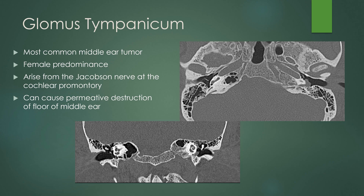The glomus tympanicum is the most common middle ear tumor. There is a female predominance. The tumor arises from the Jacobson nerve at the cochlear promontory, which is this jutting of cortical bone at the level of the cochlea. It can cause permeated destruction of the floor of the middle ear, but it's usually just a lobulated soft tissue density mass sitting in the middle ear cavity at the level of the cochlear promontory — a classic location and appearance for a glomus tympanicum.